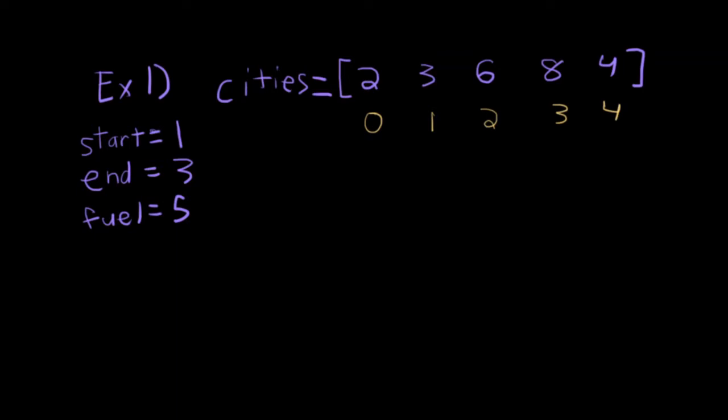What we're really interested in is starting at this index 1 right here, and ending at index 3. So we want to go from this 3 to 8, but we have five units of fuel to do it. We want to know how many ways can we do that. And the answer ends up being 4. I'll just show you the possible ways we can do it.